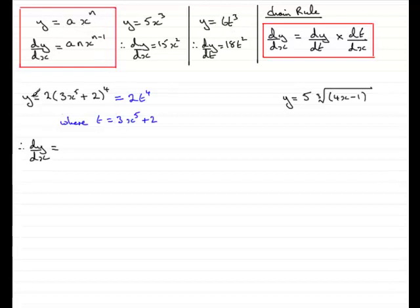So therefore dy by dt is going to be 4 times 2, 8. Drop the power of t by 1. So you're going to get 8t cubed. So we could write that in as 8. But instead of writing t cubed I know that t is 3x to the 5 plus 2. So I can write that in as 3x to the power 5 plus 2. That's the t bit. But remember it was 8t cubed. So we've got to write that to the power 3. 8t cubed.